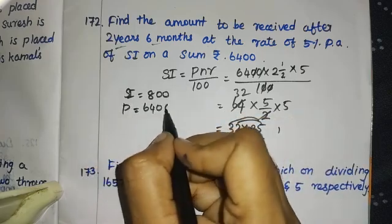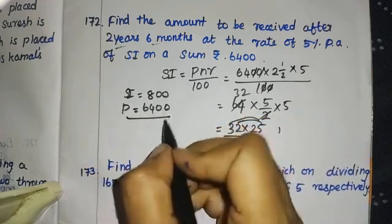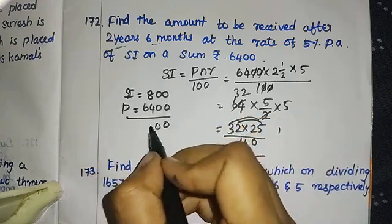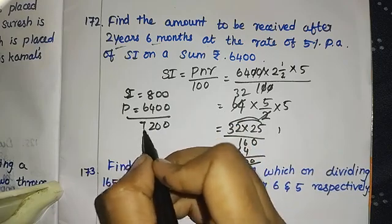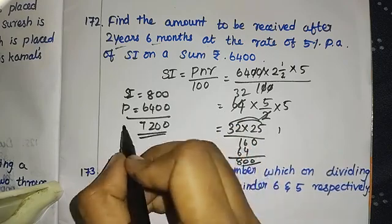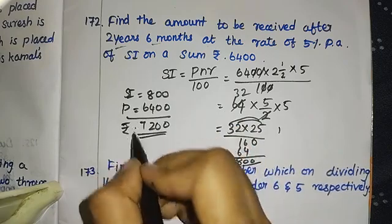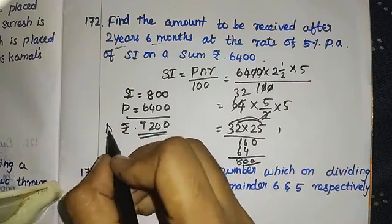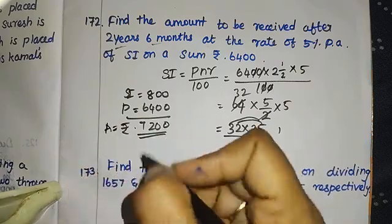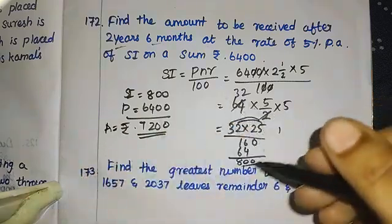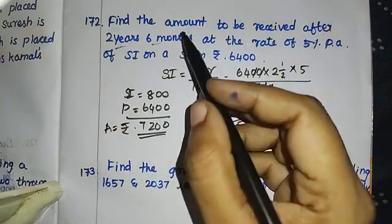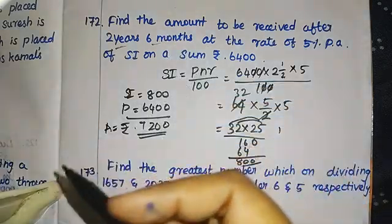The simple interest is eight hundred rupees. Now to find the amount, we add the simple interest to the principal: six thousand four hundred plus eight hundred equals seven thousand two hundred rupees. So the final amount is ₹7200.